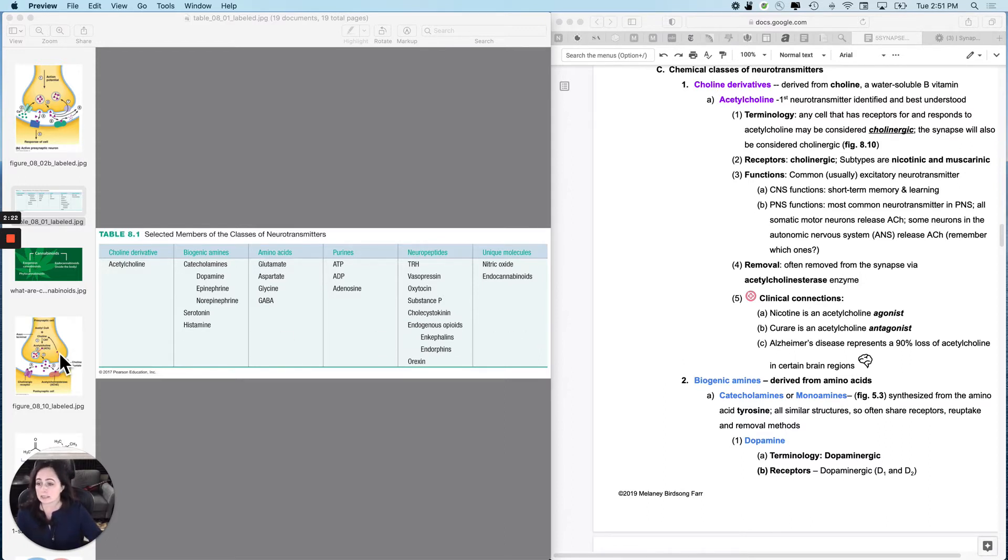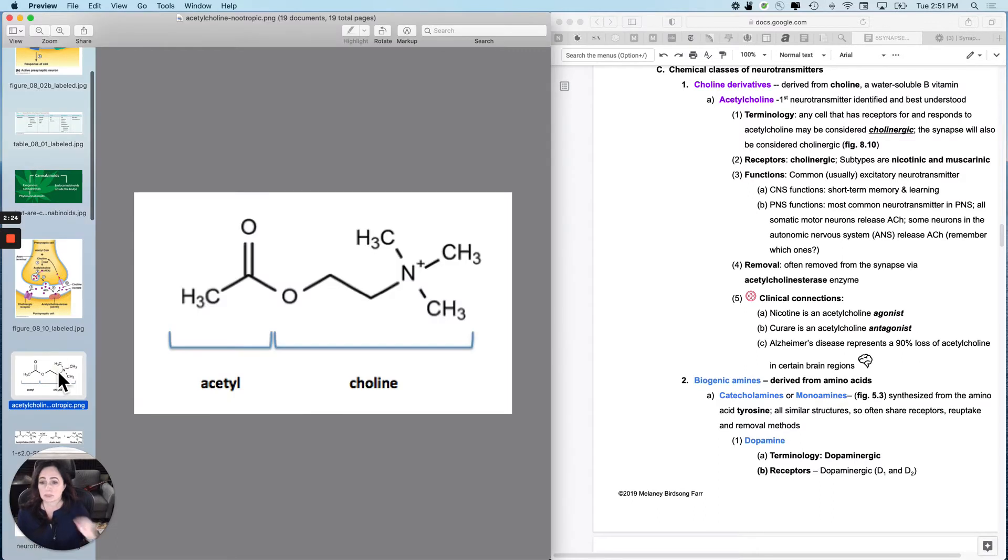This acetylcholine looks like this. It's an acetic acid with choline. Choline is a water-soluble B vitamin, and you stick acetic acid on it, and you've got acetylcholine. This is the first neurotransmitter that we found. It's also the best understood. It's really abundant in the peripheral nervous system, which makes it way easier to study than a CNS neurotransmitter.